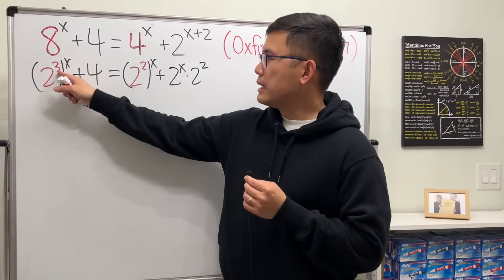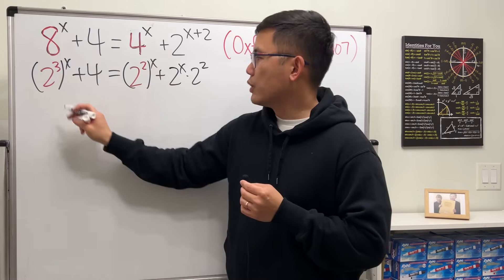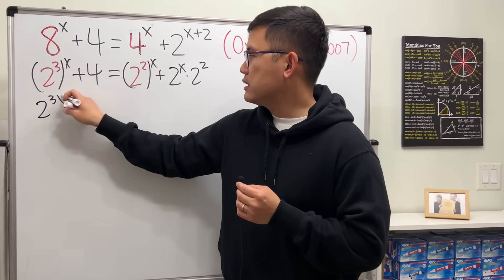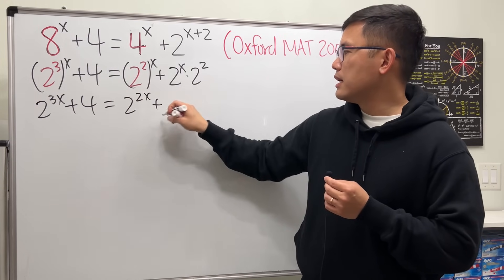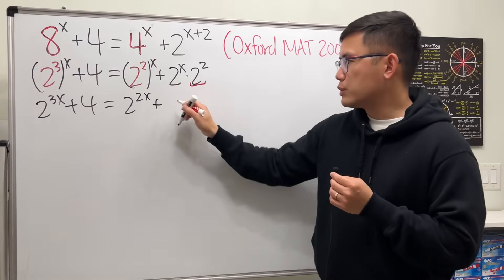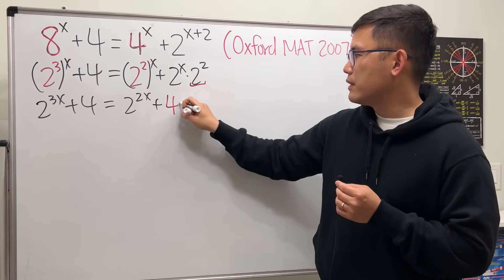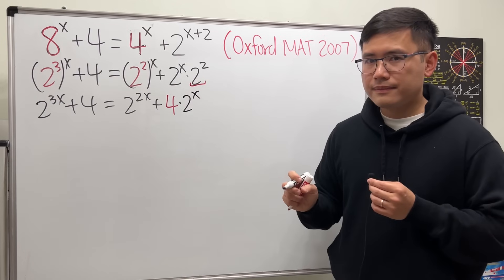Now, we can multiply the powers and power right here. So we get 2 to the 3x plus 4 equal to 2 to the 2x plus... Let's write down 2 to the second first, which is 4, and then we have 2 to the x.